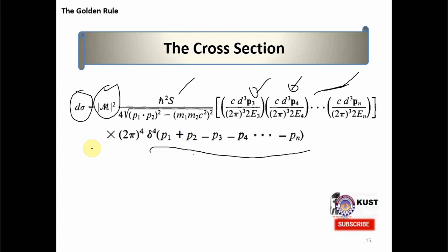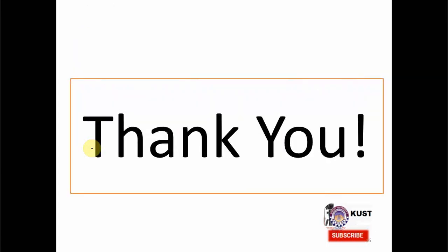In today's lecture we have discussed in detail the Fermi-Golden Rule, a very helpful formula for calculating decay rates and cross-sections — the two key parameters in the experimental probes of particle physics. I have given the general form of the Fermi-Golden Rule, and then the particular forms for decay rates and cross-sections, along with simple worked examples. Thank you all.